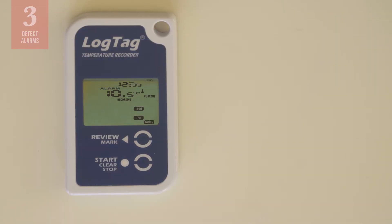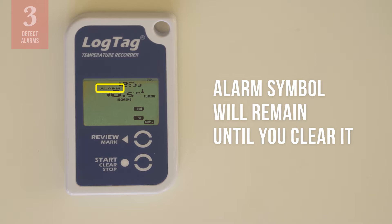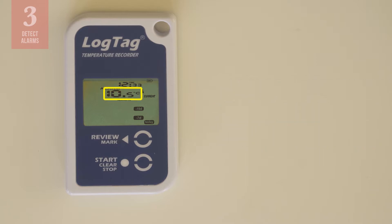When the log tag alarm is triggered, you can see the word alarm on the display. This alarm symbol will remain until you clear it, even if temperatures go back within range. Here, you can see that temperatures are still too high — it is 10.5 degrees Celsius.